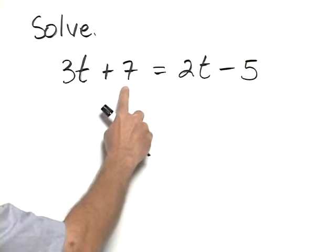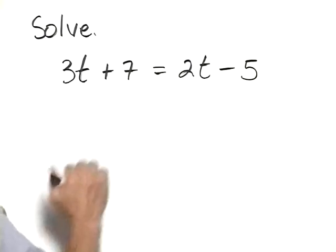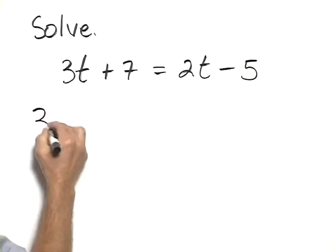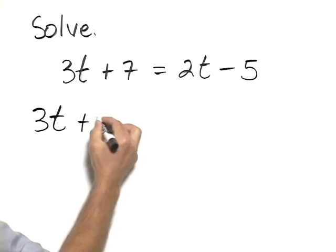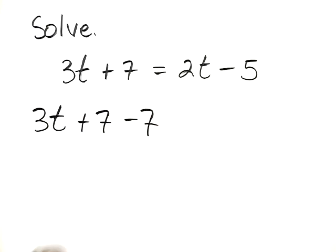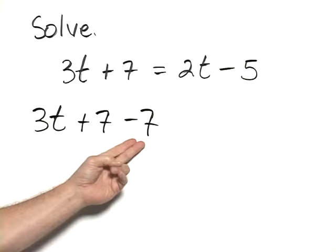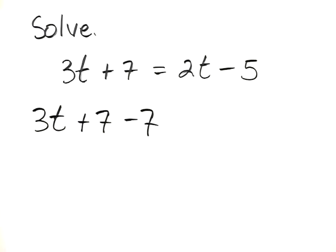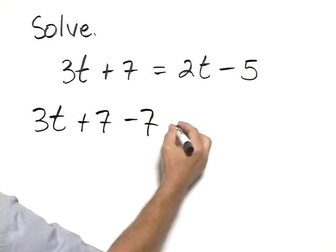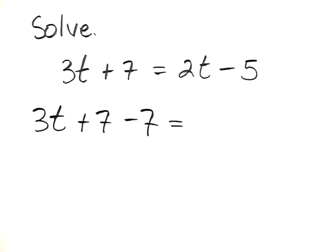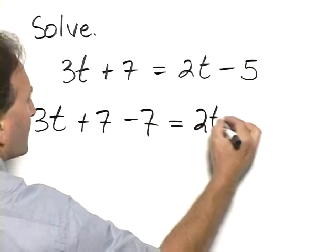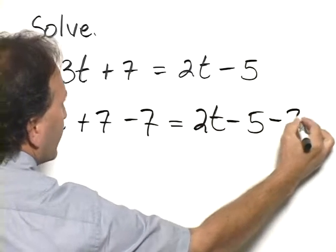we'll start by collecting the constants on the same side, and that means I'm going to add a negative 7 to both sides. Remember, adding a negative 7 is the same as subtracting a positive 7, and that's the way that I've written it. So on the right-hand side, we also want to add a negative 7.